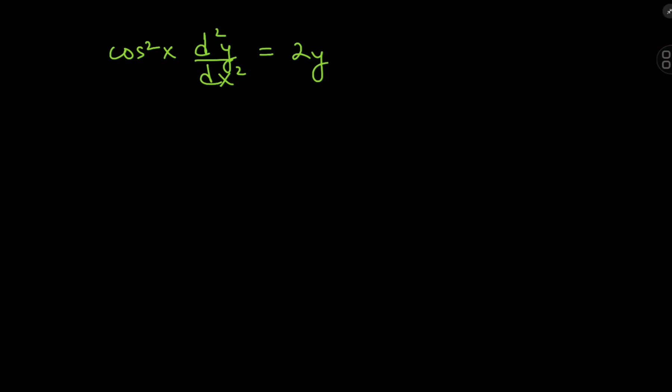Today we have this really cool differential equation. It's the squared cosine of x times the second derivative of y with respect to x being equal to 2 times y. The nice way to start is to expand using the secant function, so that on the left hand side we have d²y/dx² equal to 2y times the squared secant of x.